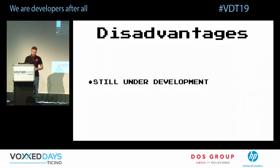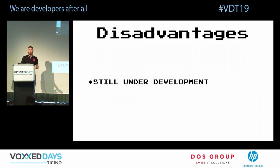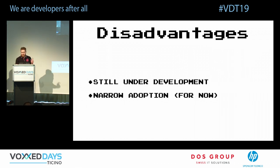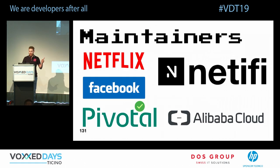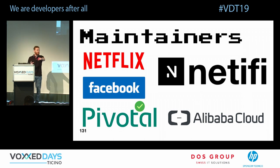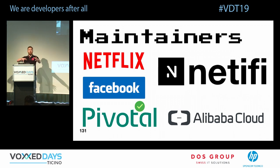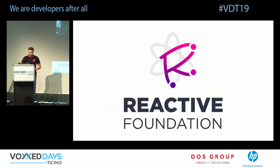Disadvantages: RSocket is still under development. The best client is RSocket-Java, followed by RSocket-C++, then RSocket-JS. There's an RSocket-.NET client, RSocket-Go is available but still developing. There's also narrow adoption — not many companies use RSocket yet, though the notable adopters are impressive: Netflix (where it was developed), Facebook (every Facebook Messenger user uses RSocket today), Pivotal, and Alibaba for IoT.